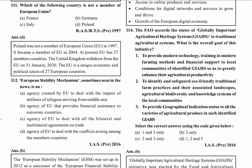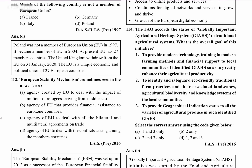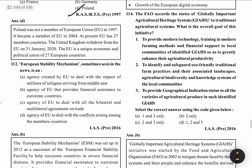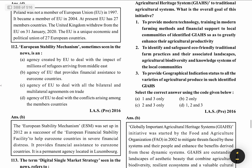Question Number 11. In 1997 there was no equation. In 2004 it was created. Now there are 27 countries and the United Kingdom was withdrawn on January 31, 2020. European Stability Mechanism, sometimes seen in the news.